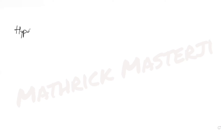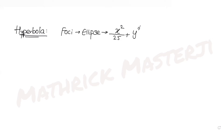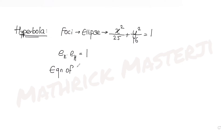Today's question is from the topic of conics, specifically from the concept of hyperbola. The question says that a hyperbola passes through the foci of an ellipse whose equation is given as x²/25 + y²/16 = 1. The transverse and conjugate axes of the hyperbola coincide with the major and minor axes of the ellipse respectively, and the product of their eccentricities is 1. We have to find the equation of the hyperbola.